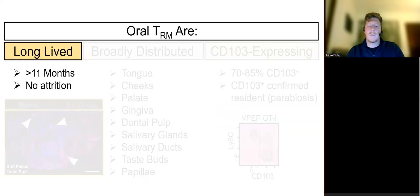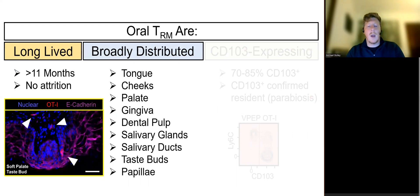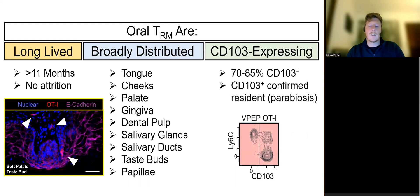Moreover, VPEP-elicited oral TRM were durably maintained in the mouth, broadly distributed throughout diverse oral structures, and largely expressed the tissue retention marker CD103.